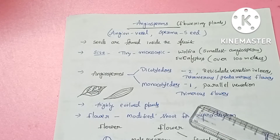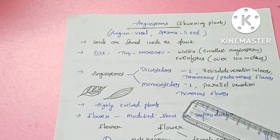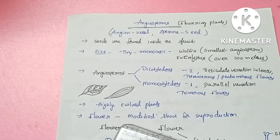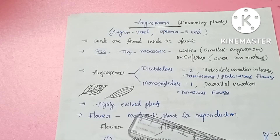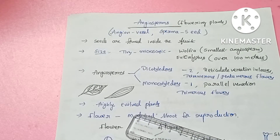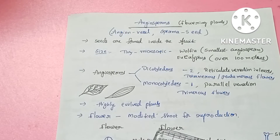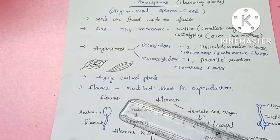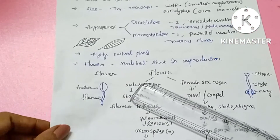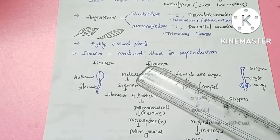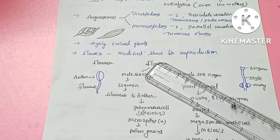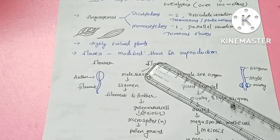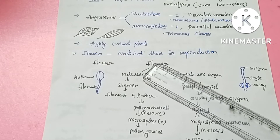In monocotyledons, there are 3 rows of petals and trimerous floral arrangements. Angiosperms are also highly evolved, advanced plants. Let's look at the flower.